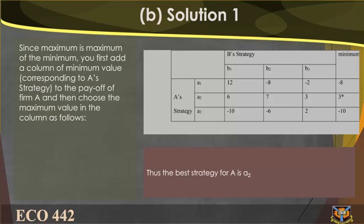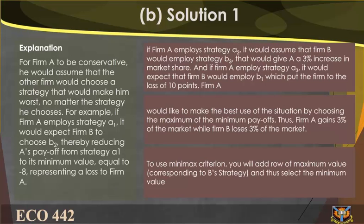Solution: Since maximin is the maximum of the minimums, you first add a column of minimum values corresponding to each of A's strategies to the payoff matrix, then choose the maximum value in that column. Thus the best strategy for A is A2. For Firm A to be conservative, it would assume the other firm would choose a strategy that makes it worst. For example, if Firm A employs strategy A1, it would expect Firm B to choose B2, reducing A's payoff to its minimum value of minus 8.